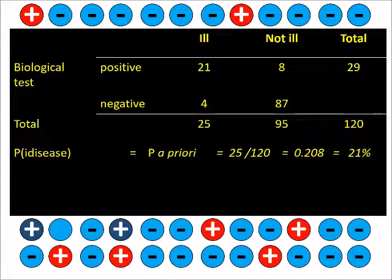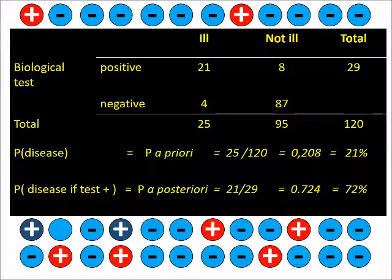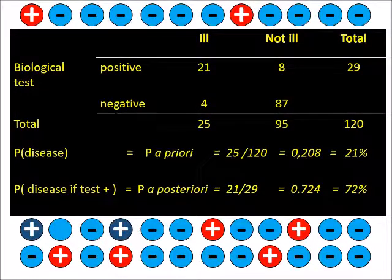29 have a positive test. Among them, 21 are ill, and 8 are not ill. So there are 72% of ill among positive. This frequency can be considered as the posteriori probability of being ill.